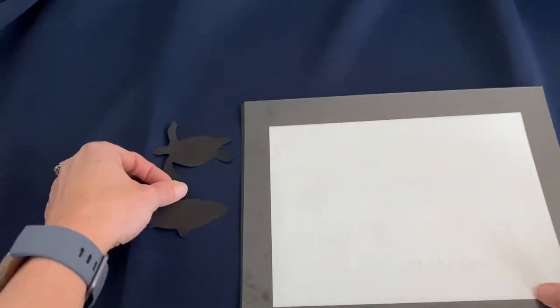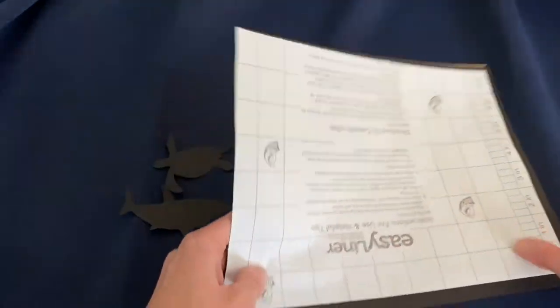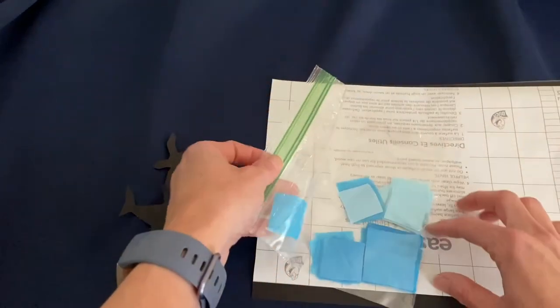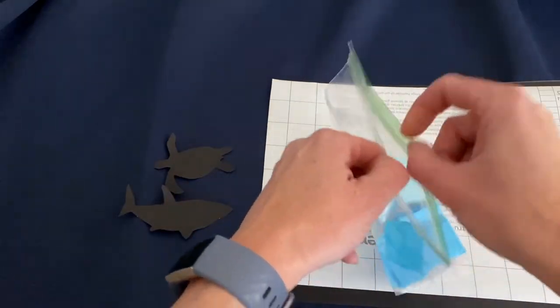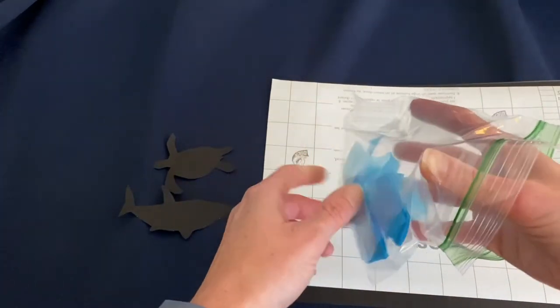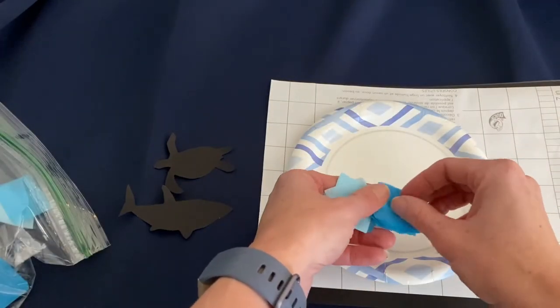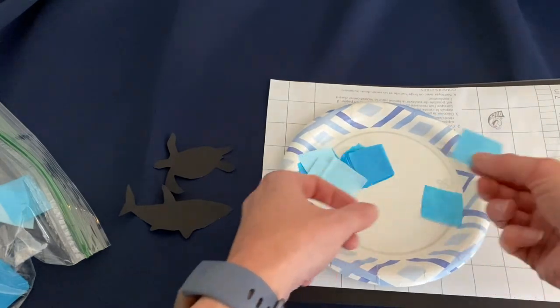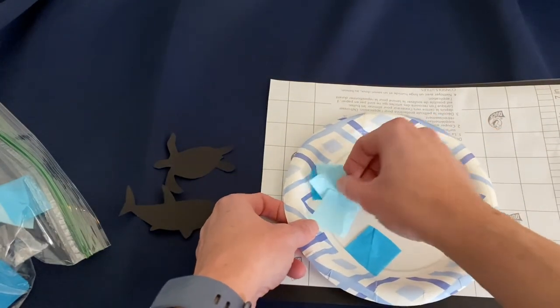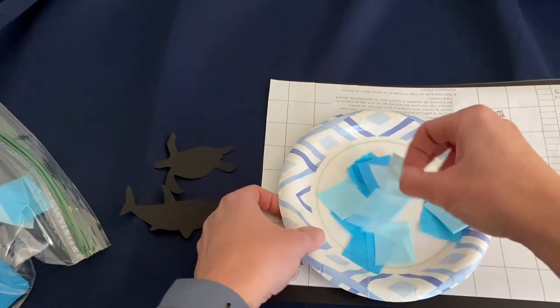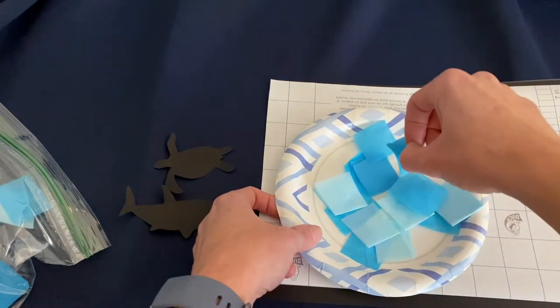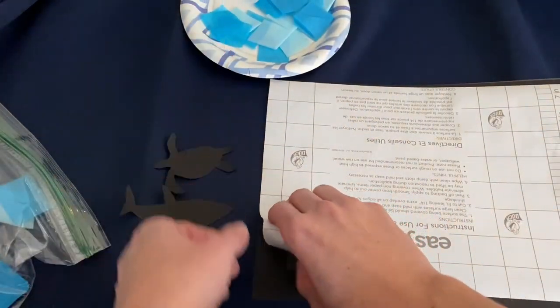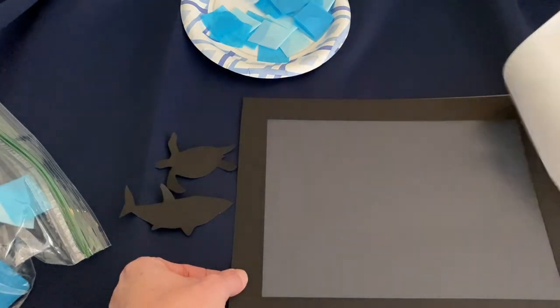Now we get to the fun part. We're going to get our tissue paper pieces ready. You might want to pour these into a bowl or put them on a plate. For really young kids, you can help separate these or give them one at a time. For older kids, even separating them is a good fine motor activity. I'm going to spread them out a little bit.